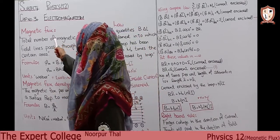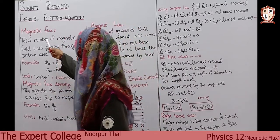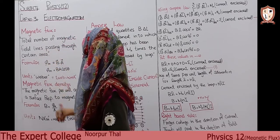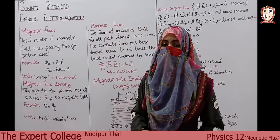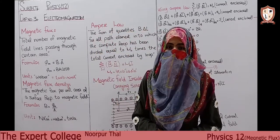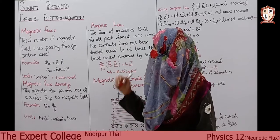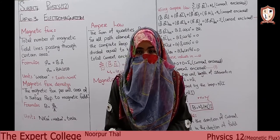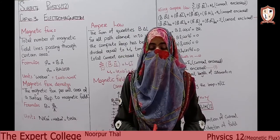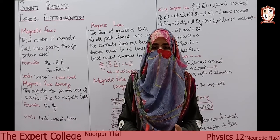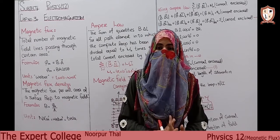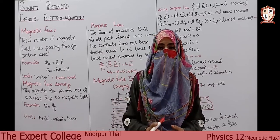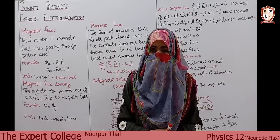Magnetic flux: the definition is the total number of magnetic field lines passing through a certain area. We have a certain area through which magnetic lines of force pass — that is the magnetic flux. In the previous chapter we discussed electric flux, where electric lines of force pass through a surface area. Here, similarly, magnetic lines of force pass through a surface area to give us magnetic flux.